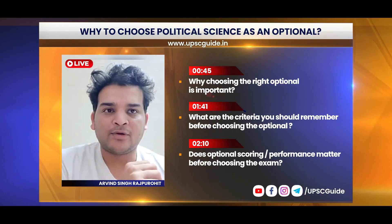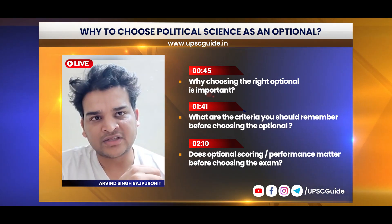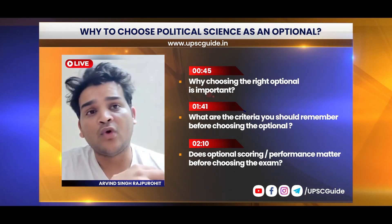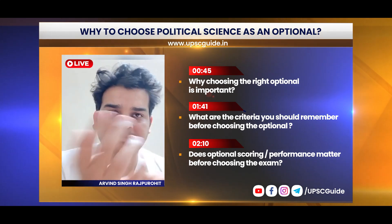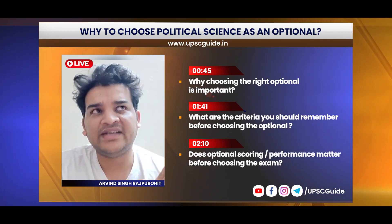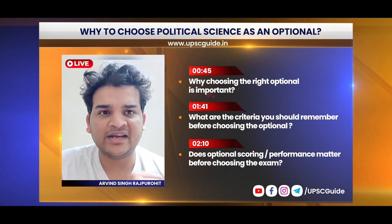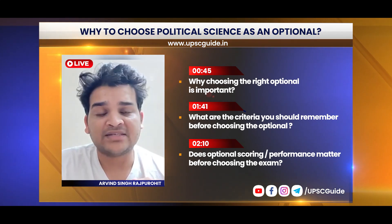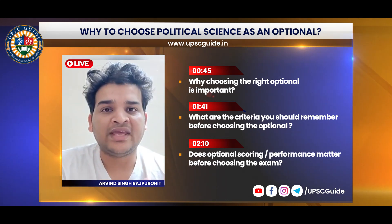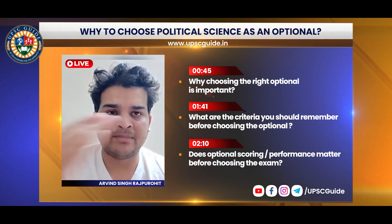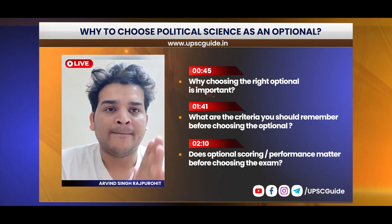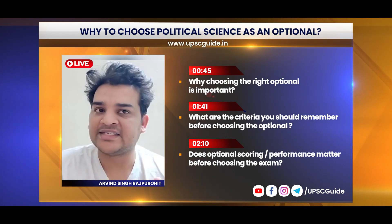I will tell you that political science was my optional when I appeared for the UPSC exam, and my scores were always high. In 2016, I had 276 marks. In 2018, I got 296 marks. Looking at the break-up: Paper 1 was 147 marks and Paper 2 was 149 marks. So that was my political science optional score of 296 marks.